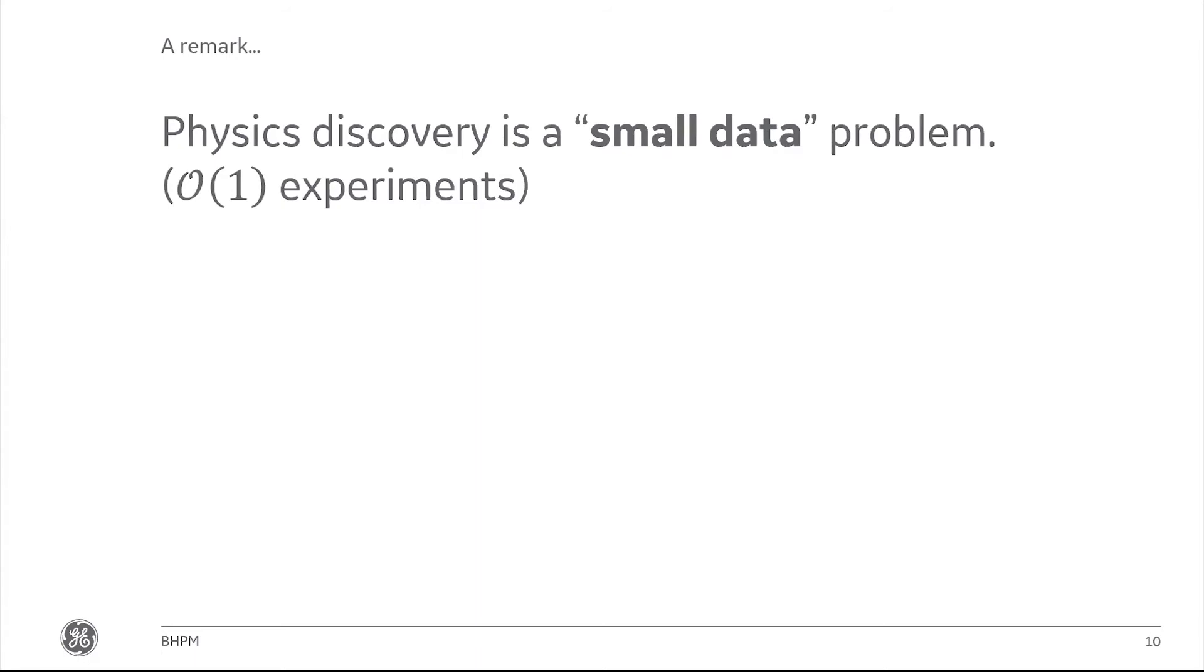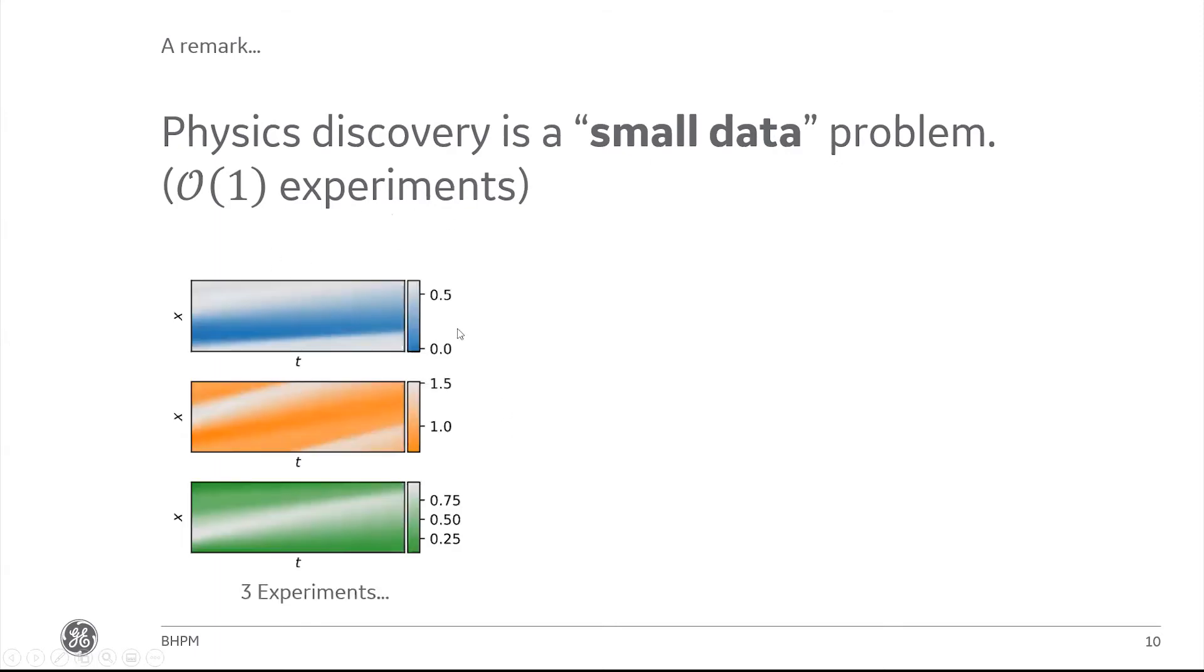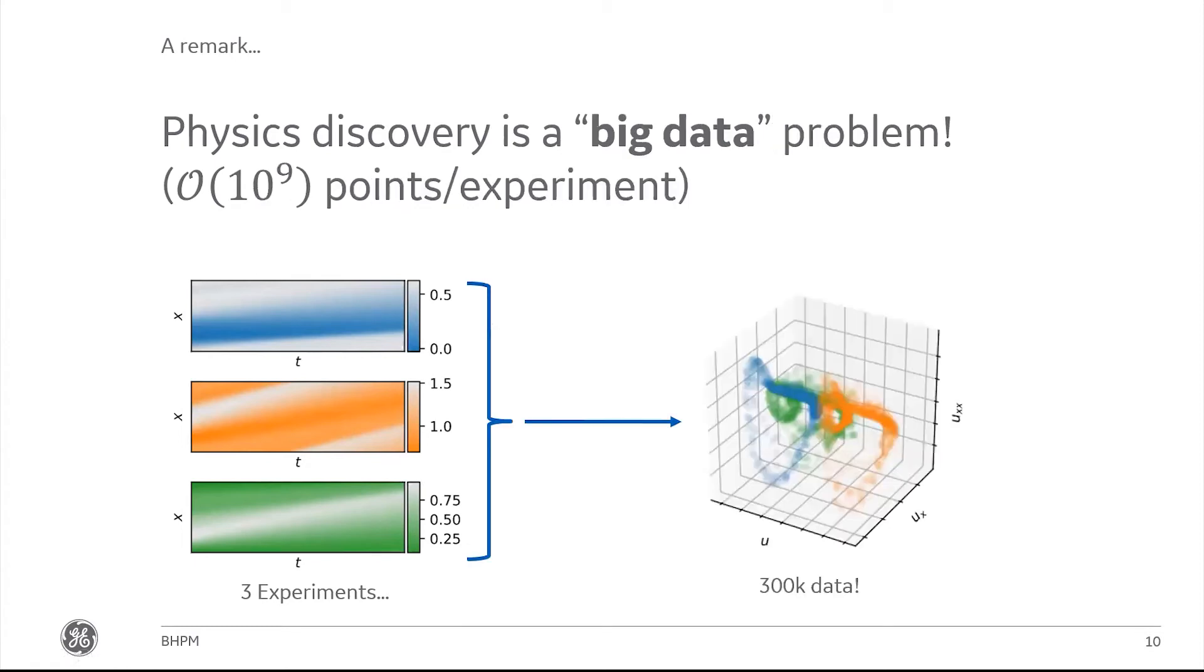Having written the model, I like to put one quick remark here, contrasting this machine learning setting with those we usually encounter in physical sciences. One thing we like to say is that physics discovery may very well be a small data problem in the sense that we may have only a handful of experiments. But because of what we're learning, I contend this is not exactly correct. Instead, I would say this is really a big data problem. While we might have three experiments, each might generate hundreds of thousands or even up to billions of data points. In the context of this input space and the coverage we get for that unknown operator F, we might actually find ourselves with a lot of data.